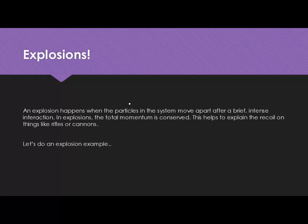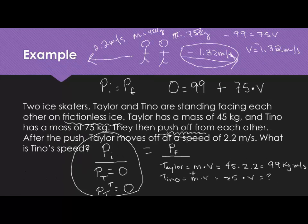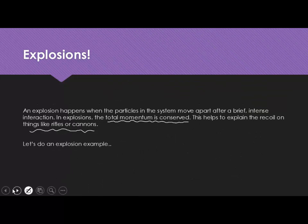One last thing we're going to talk about is the idea of an explosion. An explosion happens whenever you have particles in a system and they move apart after really brief and intense interaction. In explosions, we have the same kind of conservation of momentum idea. This helps to explain the recoil on things like rifles or cannons. When you have a cannon and it fires a cannonball, the cannonball takes off with a very high velocity. But the cannonball is pretty small compared to the size of the cannon. So the total momentum has to be conserved. If the system momentum initially is zero, then after that explosion, it has to be zero again. The cannon will move back a little bit. It just doesn't move back very fast because it has so much more mass than the cannonball.